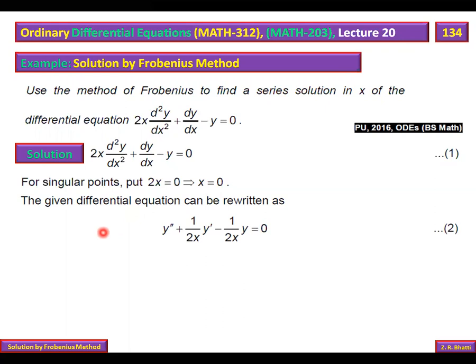In standard form, the coefficient of the second-order derivative is 1. In this form, P(x) is the coefficient of y' and Q(x) is the coefficient of y. Multiplying P(x) by x gives the small p(x), which must be analytic. Similarly, multiplying Q(x) by x² gives small q(x).